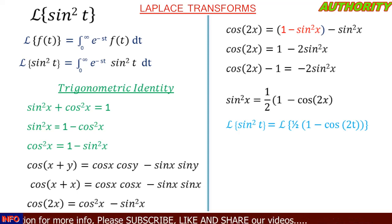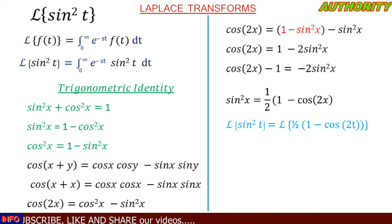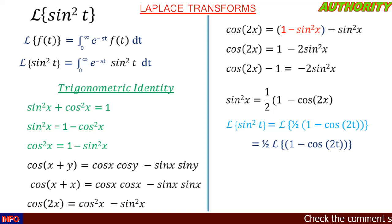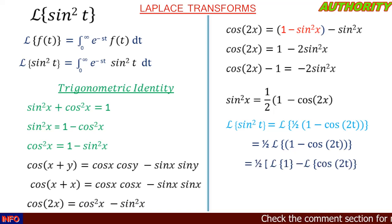So the Laplace transform of sin²t is the same as the Laplace transform of ½(1 − cos 2t). Under the linearity property we bring the constant ½ outside, giving ½ times the Laplace transform of (1 − cos 2t). Taking individual transforms, that becomes ½ times [L{1} − L{cos 2t}].